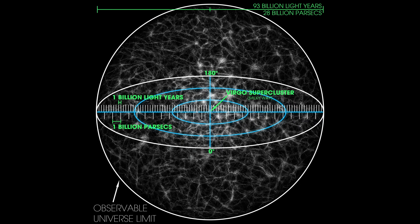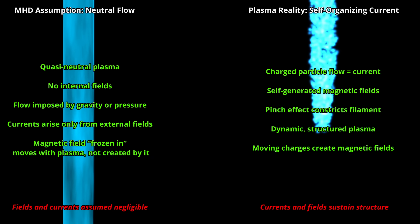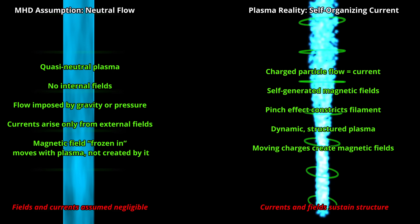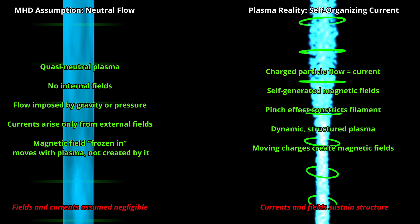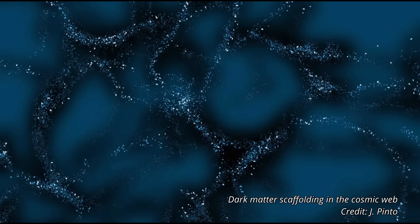On larger scales, the cosmic web, the gas is assumed to be fully ionized plasma. But here, the plasma is modeled using magnetohydrodynamics, which treats it as nothing more than a simple conducting fluid. MHD on its own cannot explain the observed structure of these vast filaments. It offers no mechanism for plasma to actively organize itself. So, cosmologists assume an invisible scaffolding of dark matter is holding the plasma and galaxies in place, even though this dark matter has never directly been observed in the filaments themselves.